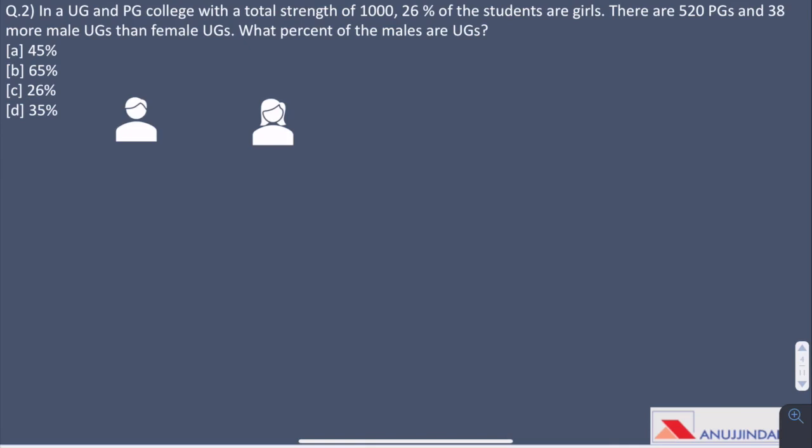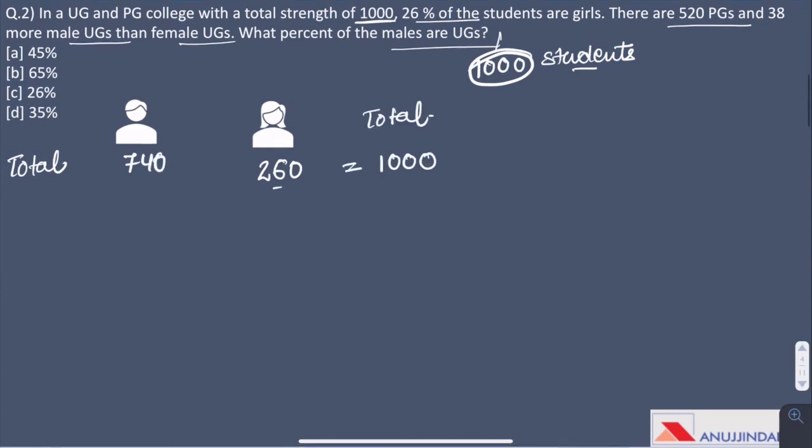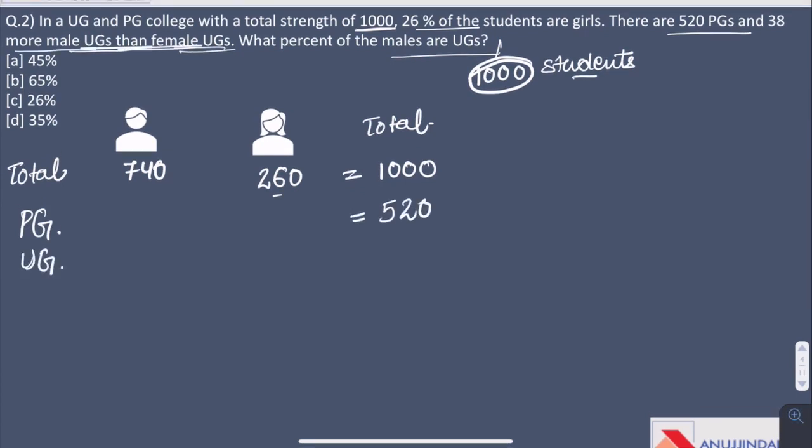Question 2. In a UG and PG college with total strength of 1000, 26% of the students are girls. There are 520 PGs and 38 more male UGs than female UGs. What percent of males are UGs? First of all in such questions try to make a table for the given data so as to see things clearly. So here we have been given that there are 1000 students. 26% are girls, so 260 are total girls. And the remaining 740 are boys. Now we'll talk about PG students.